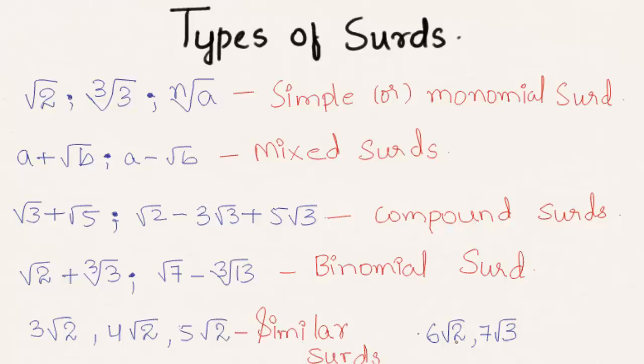Coming over to here, we have root 2 and root 3, which are different from each other. So these surds are called dissimilar surds.